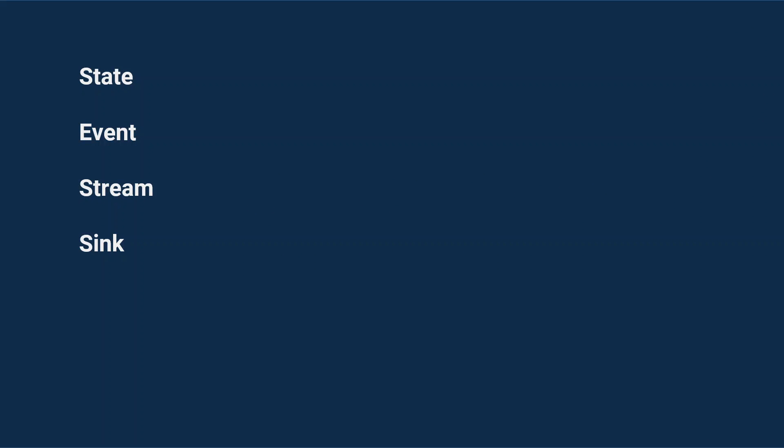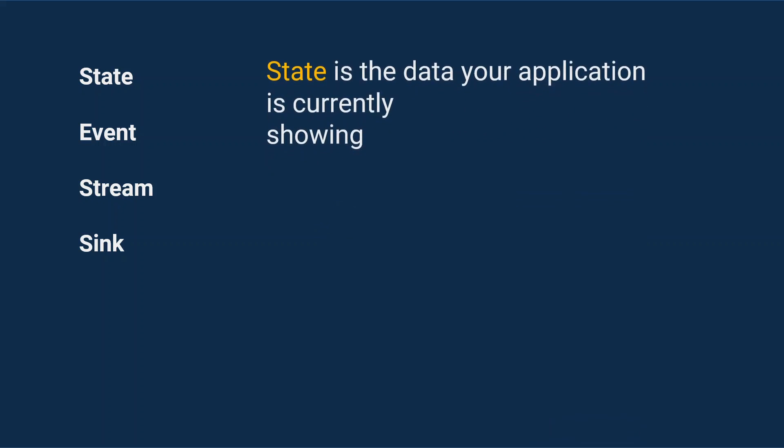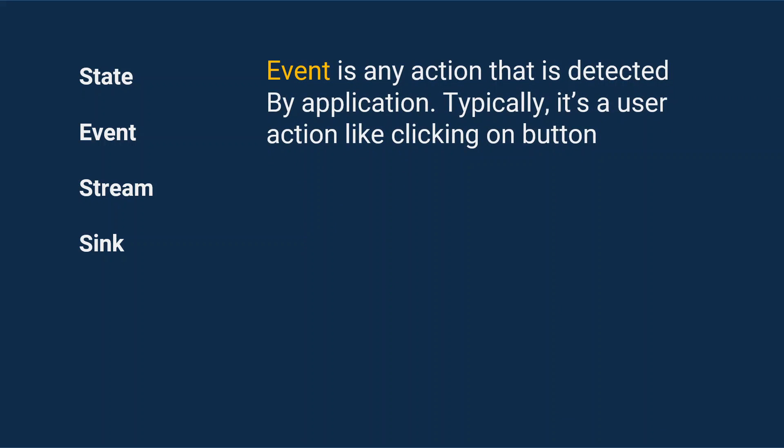In order to learn and understand BLoC pattern, you need to have knowledge of four different terms: state, event, stream, and sink. In simple words, state is the data your application is currently showing. If you already work on Flutter, you already have knowledge of state. Flutter is a reactive framework, and whenever the state or data changes, the UI reacts to it and re-renders itself to show the latest version. Now let's talk about event — event is any action detected by your application.